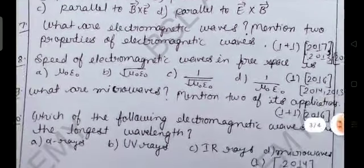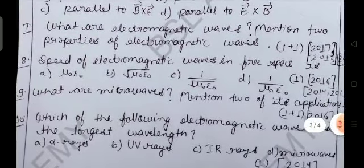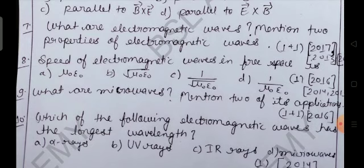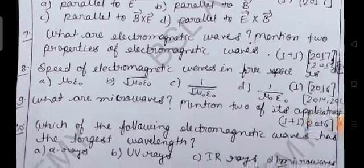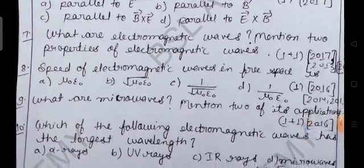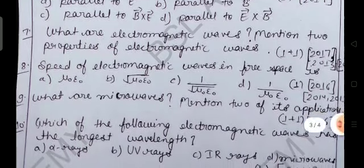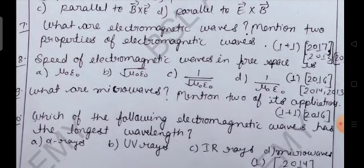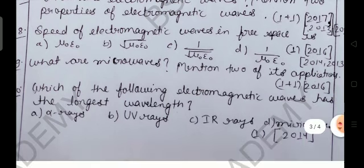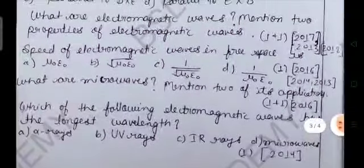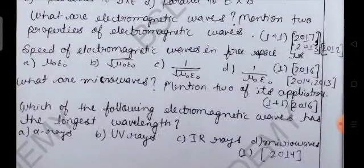Now next, speed of electromagnetic waves in free space is: option a mu not epsilon not, option b root under mu not epsilon not, option c one by root under mu not epsilon not, and option d one by mu not epsilon not. So what is mu not and what is epsilon not? Epsilon is the permittivity in the free space and mu not is the permeability. So this one is also most important, asked three times in three years.